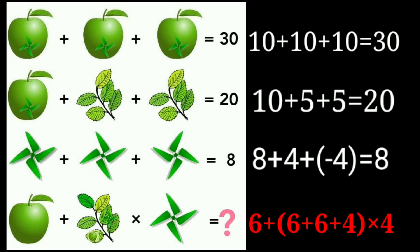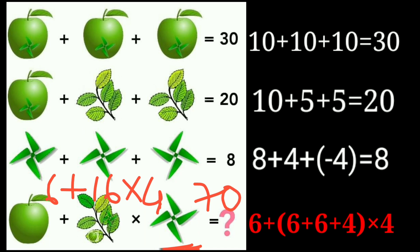Now solving: the value of the apple is 6, the leaf is 6, and the fan is 4. So 6 plus 6 plus 6 plus 4 equals 16, then 16 multiplied by 4 equals 64, plus 6 equals 70. The correct answer is 70.